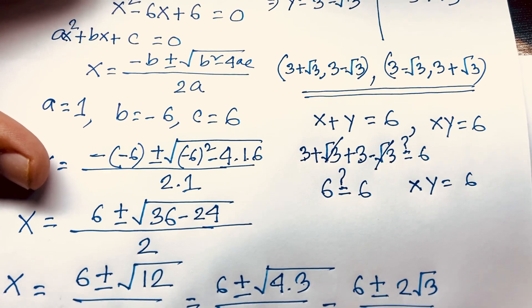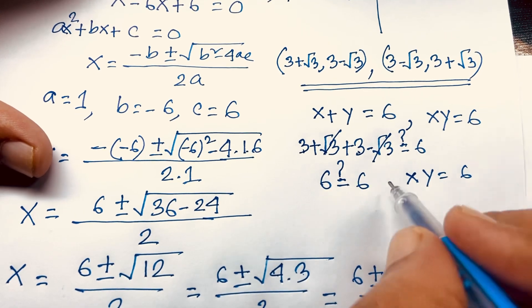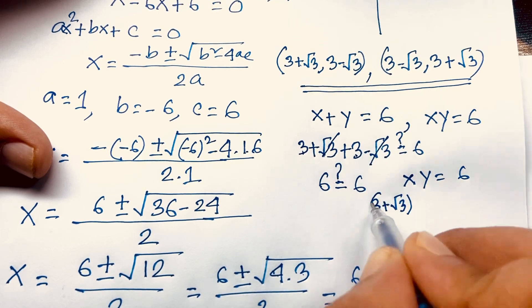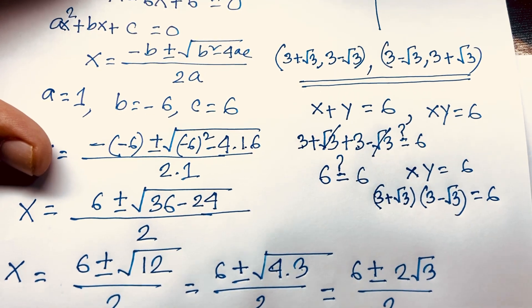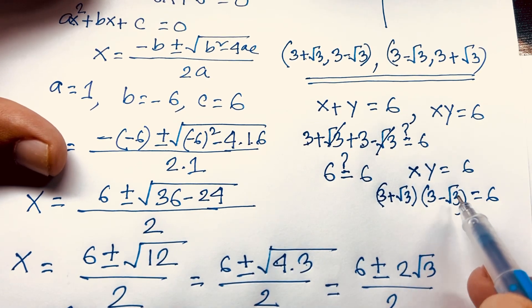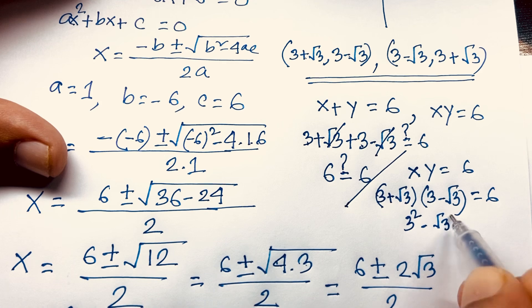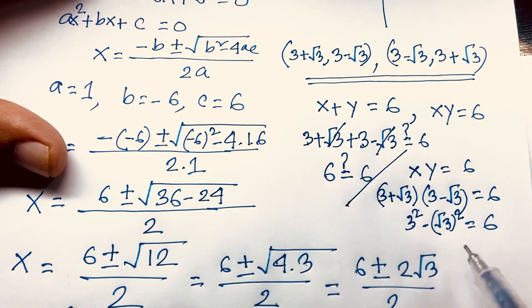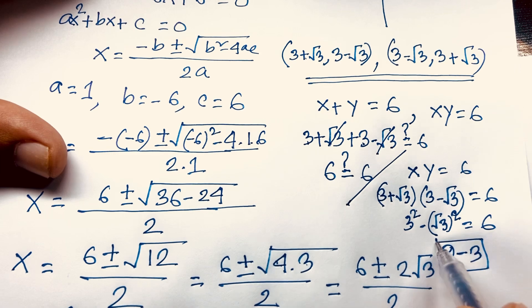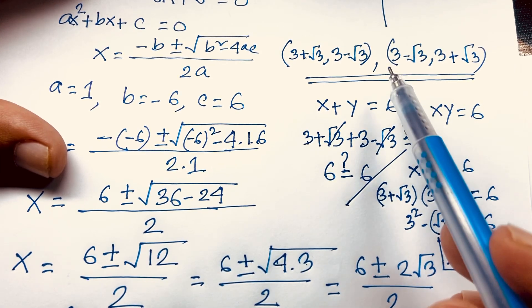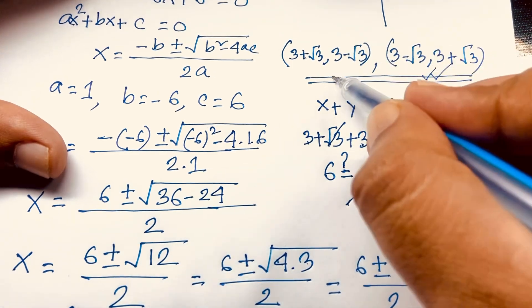Now checking xy equals 6: (3 plus root 3) times (3 minus root 3) equals 6. Using the identity (a plus b)(a minus b) equals a squared minus b squared: 3 squared minus (root 3) squared equals 9 minus 3 equals 6. Both solution pairs satisfy both original equations, so both are correct answers.